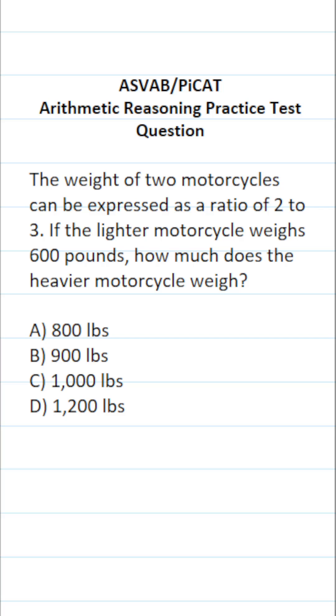This arithmetic reasoning practice test question for the ASVAB and Picat says the weight of two motorcycles can be expressed as a ratio of two to three. If the lighter motorcycle weighs 600 pounds, how much does the heavier motorcycle weigh?